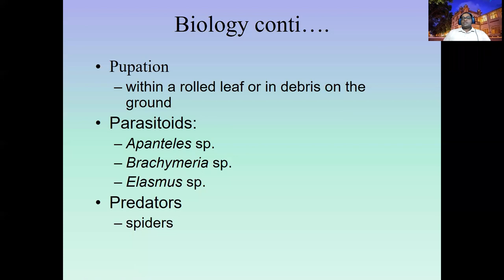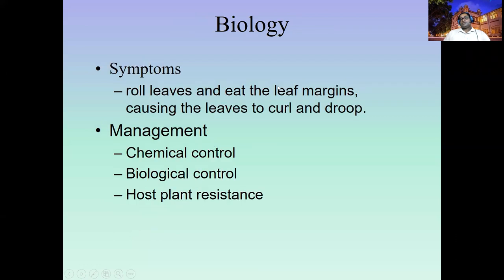Management of the okra leaf roller includes using parasitoids such as Elasmus and Brachymeria, and predators like spiders. The leaf rolling, feeding, and excreta inside the roll cause inferior quality of the produce and make the leaves unattractive for market.